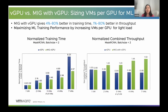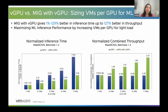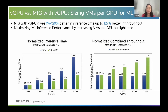We observe similar results when we compare throughput. For Mask R-CNN, we use batch size, which is a lightweight workload. We do the same set of experiments for inference workload. For Mask R-CNN inference, we observe similar impacts in which MIG provides better performance — up to 1.29x better inference time and up to 1.27x better throughput compared to the vGPU option.